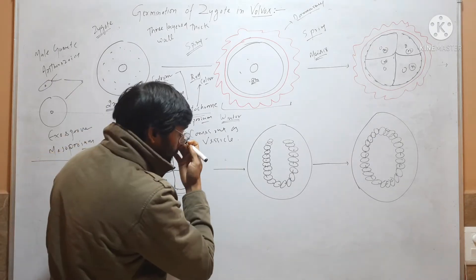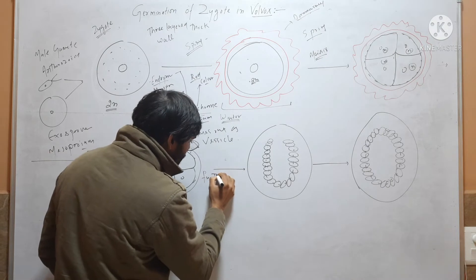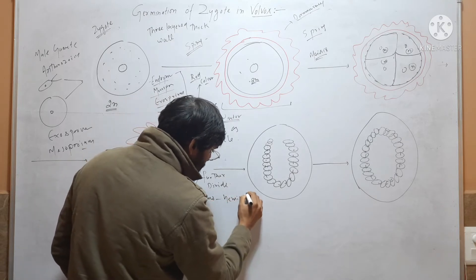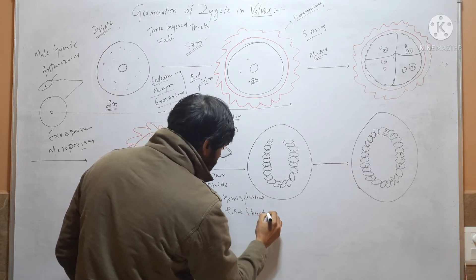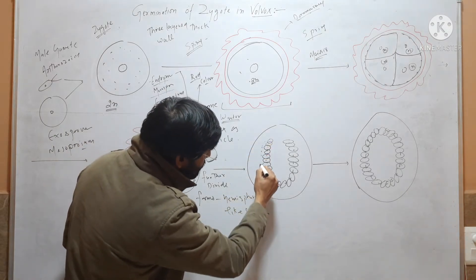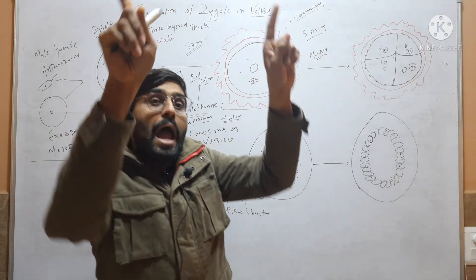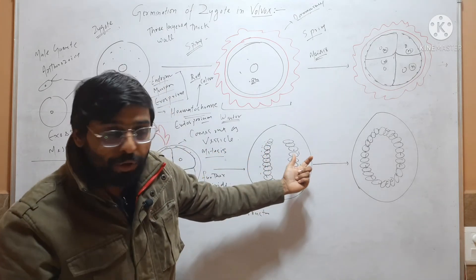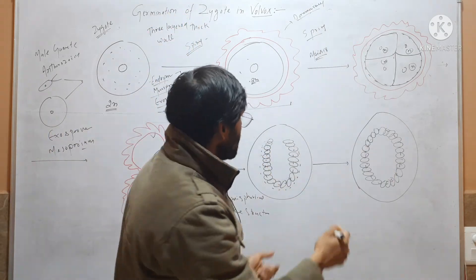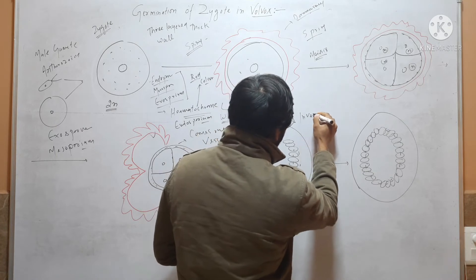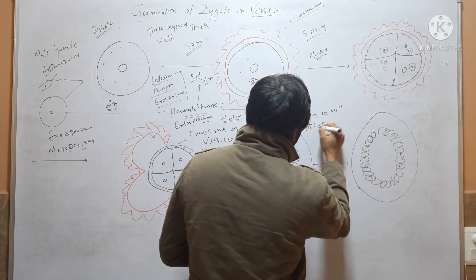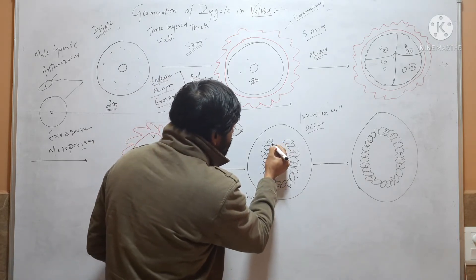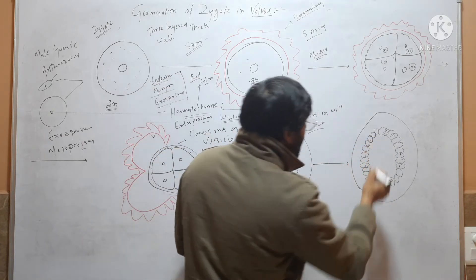These 4 cells will further divide and form a hemispherical-like structure. The cells are haploid, so mitosis division will occur and the cells will arrange themselves in the form of a hemisphere. After formation of the hemisphere, inversion will occur — similar to what occurs in asexual reproduction — and their anterior end, which is towards the inner side, will come towards the outer side.